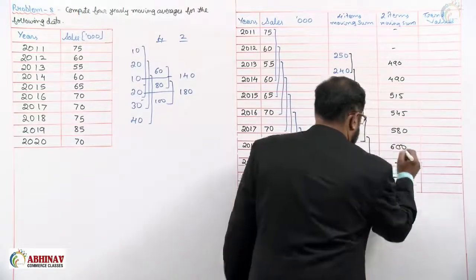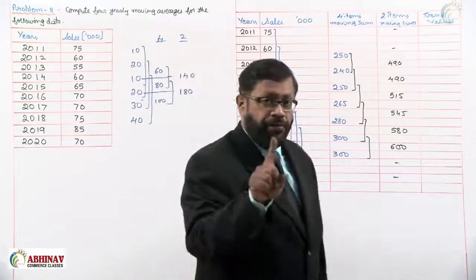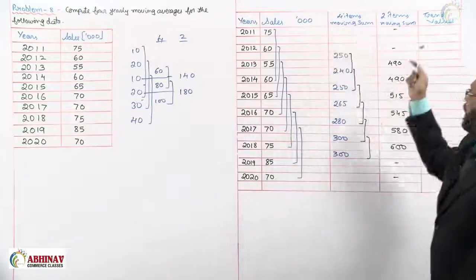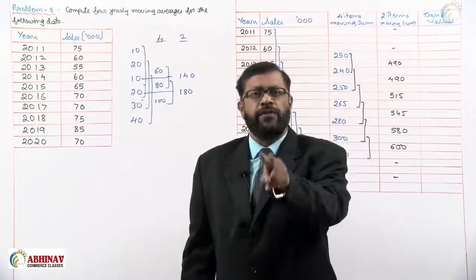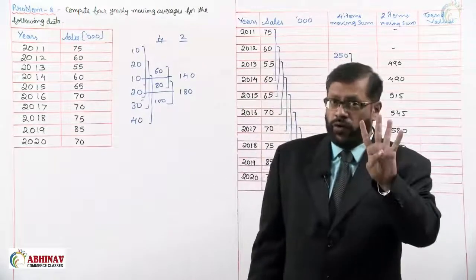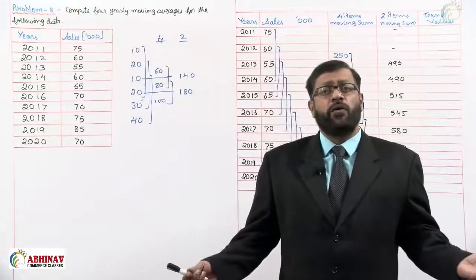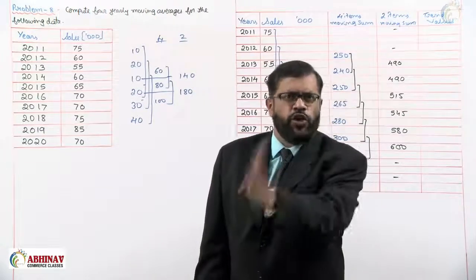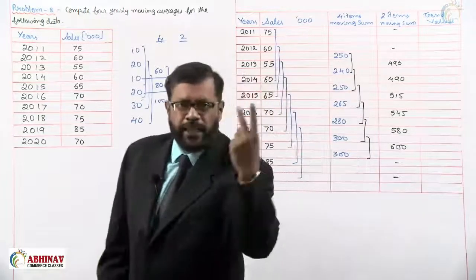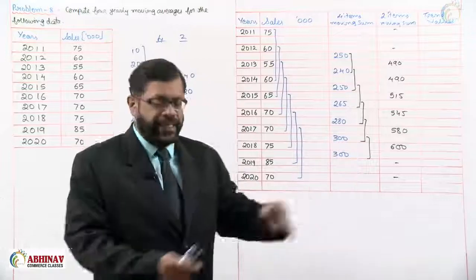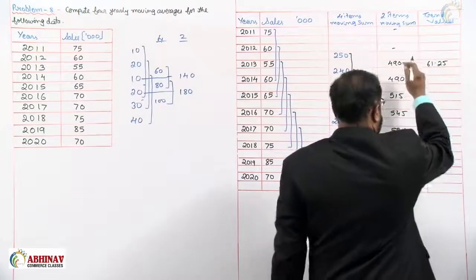Now we find the trend values. For three-yearly we divide by 3; for five-yearly we divide by 5. But for four-yearly, we first found the sum of 4 items and then the sum of 2, meaning we effectively divide by 4 and then by 2. Instead of dividing twice separately, we divide just once by 8 — because 4 times 2 is 8. So we divide each two items moving sum directly by 8. For example, 490 divided by 8 gives 61.25.